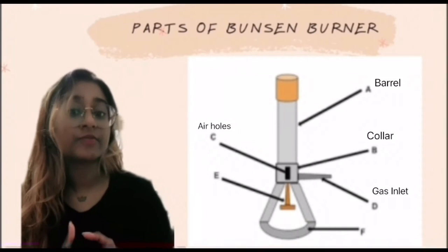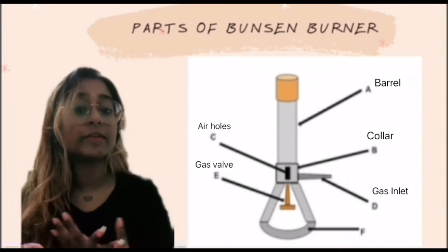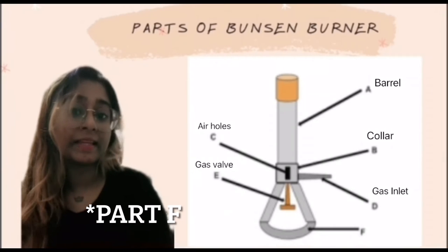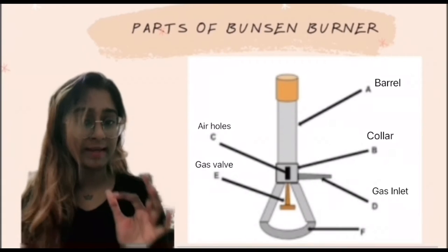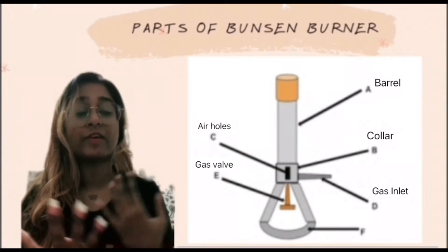Part E is known as the gas valve which helps control the flow of gas inside the Bunsen burner. Finally, part F is known as a stand which is to ensure all the pieces are not in contact with the work surface. All these parts are extremely important for the function of the Bunsen burner.